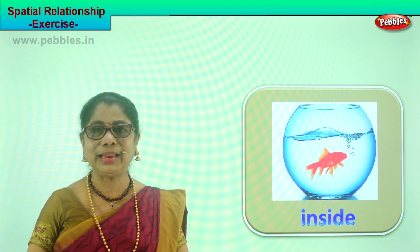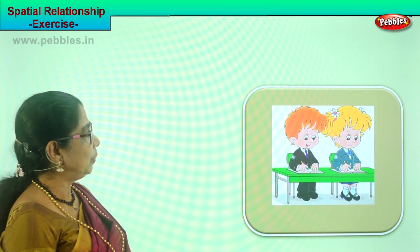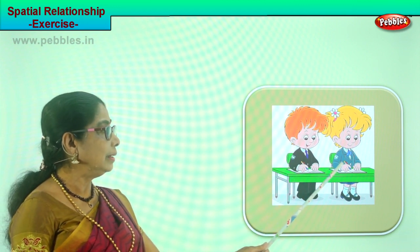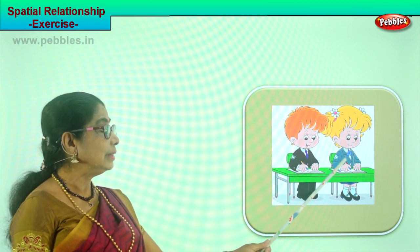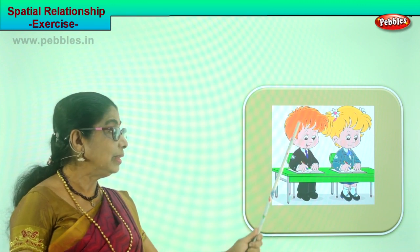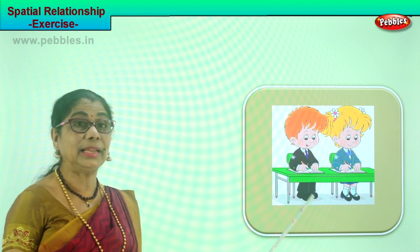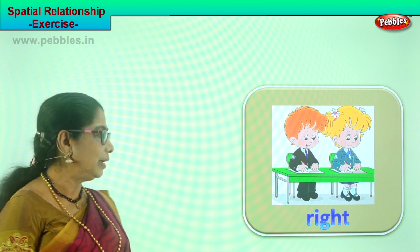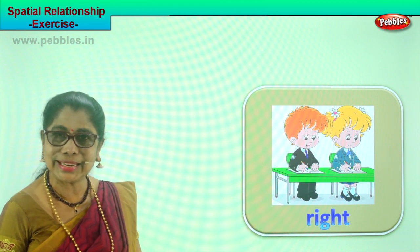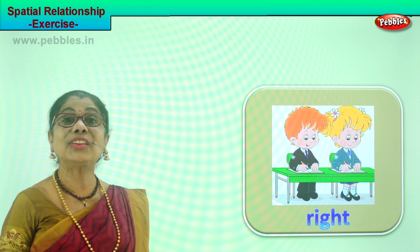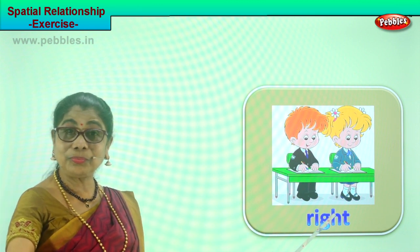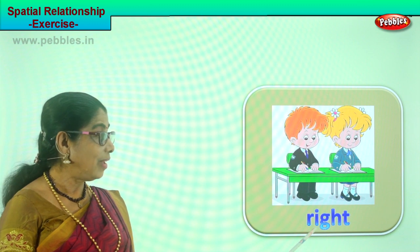Let's look at another picture. Where is the little girl sitting? The little girl is on the left. Where is the little boy sitting? He is sitting on the right side of the girl. Where is the little boy in the suit sitting? He is on the right side of the girl. Right side.